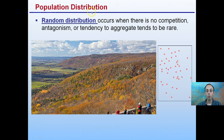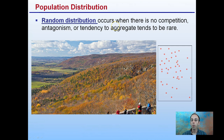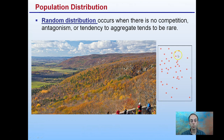Now, specific population distributions. We have something called random distribution. It occurs when there's no competition, antagonism, or tendency to aggregate, which tends to be rare. Looking at the hillside here, the presence of conifer trees is random, the presence of maple trees is random, oak trees is random. It's kind of like you took a bunch of marbles and just threw them out over an area — that's a random distribution.